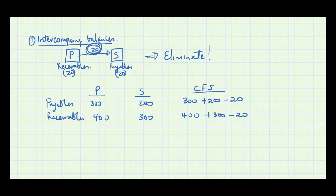Under receivables you would say 400 plus 300 minus 20. It makes no difference whether under receivables it is the parent saying minus 20 or under payables the subsidiary saying minus 20 — it's the same transaction. We list the figures from the statement of financial position and then deduct the intercompany balances.